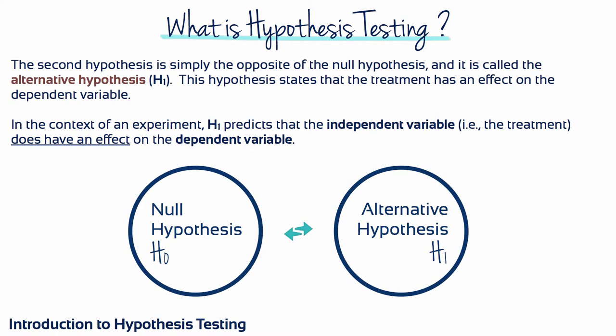The second hypothesis is simply the opposite of the null, and it's called the alternative hypothesis, with the symbol notation H1. This hypothesis states that the treatment does have an effect on the dependent variable. So in the context of an experiment, the alternative hypothesis predicts that the independent variable does have an effect on the dependent variable.